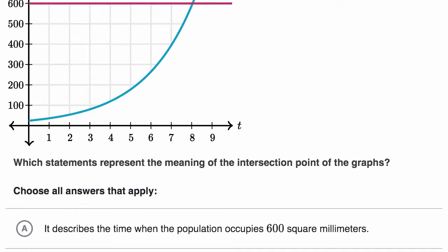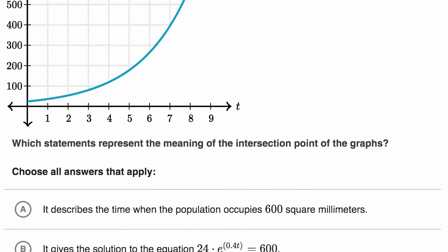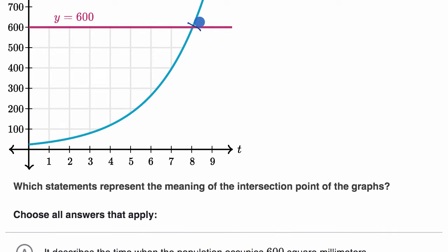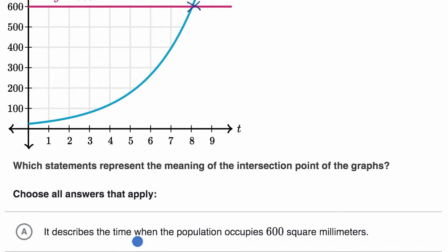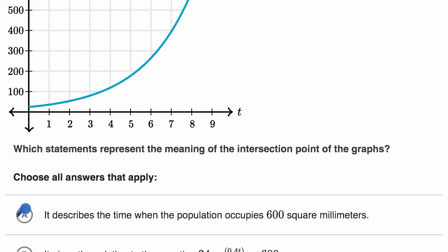They say: which statement represents the meaning of the intersection point of the graphs? Choose all that apply. Choice A says it describes the time when the population occupies 600 square millimeters. The intersection point is the time when the population has indeed reached 600 square millimeters, because that's the line y = 600. So I like that choice — I'll select it.